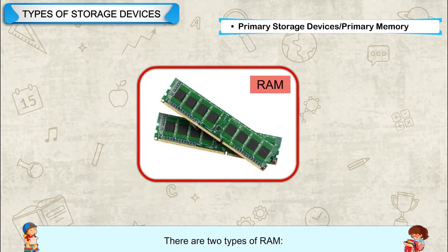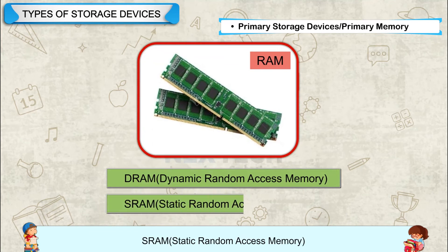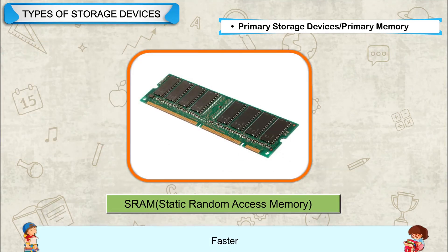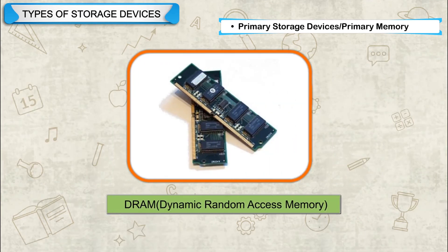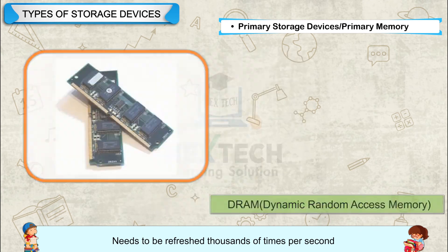There are two types of RAM: DRAM (Dynamic Random Access Memory) and SRAM (Static Random Access Memory). Static RAM is faster, more expensive, consumes more power, and does not need to be refreshed. Dynamic RAM is slower, less expensive, consumes less power, and needs to be refreshed thousands of times per second.